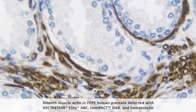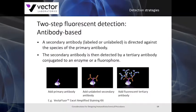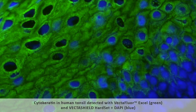In this example, you can see a human prostate stained with the Vectastain Elite ABC demonstrating smooth muscle actin staining. Another type of two-step detection is an antibody-based two-step detection, where you apply your primary antibody followed by a secondary antibody, which can be labeled or unlabeled, and then a tertiary antibody directed against your secondary. This allows the tertiary to bind to multiple locations on your secondary antibody, amplifying your signal. In this example on a frozen tonsil, cytokeratin is demonstrated using a Vectiflor XL two-step antibody-based detection system.